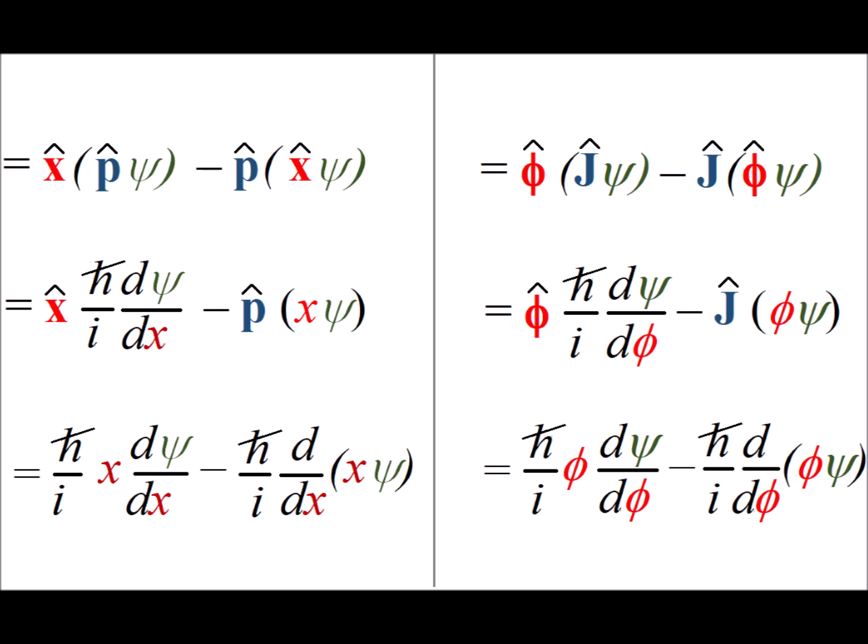One thing to keep in mind is why do we care about commutators? Well, if the commutator is equal to zero, it means that the operators commute with each other so that we can know both simultaneously with any degree of accuracy that we want. If the commutator is not equal to zero, then that means that they do not commute and therefore we cannot know both simultaneously to a perfect understanding.